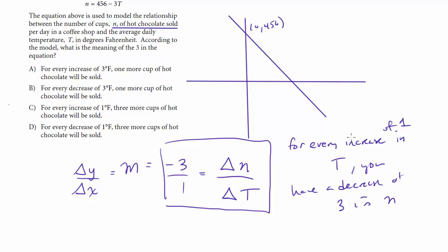In other words, it kind of makes sense if you think about it. As the temperature goes up 1 degree, you're going to sell 3 fewer cups of hot chocolate, which would make sense because the hotter it gets, fewer people want to eat hot chocolate. But anyway, so that doesn't make sense. For every decrease of 3 degrees Fahrenheit, one more cup of hot chocolate will be sold. That's got it flipped. That would be if it's 1 third or negative 1 third. How about C?